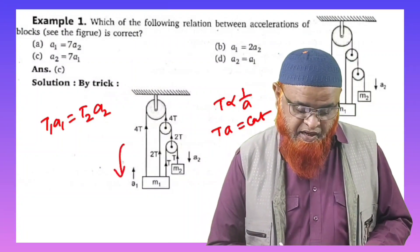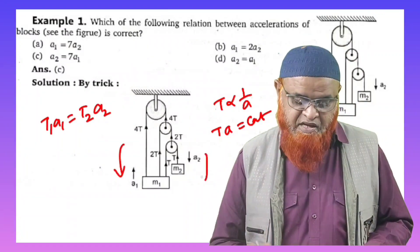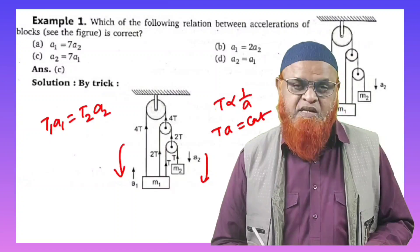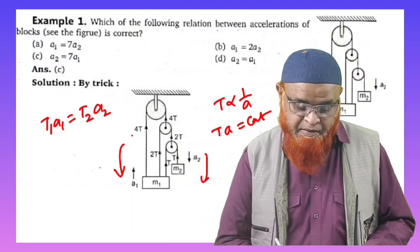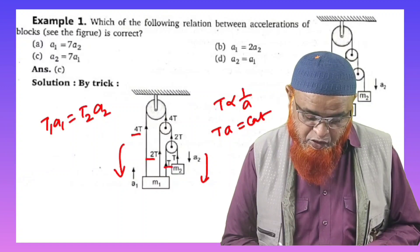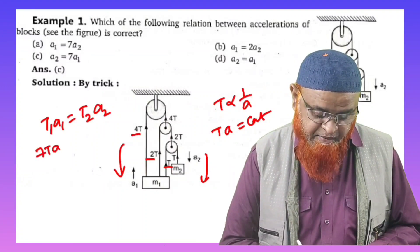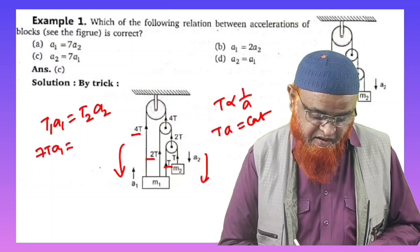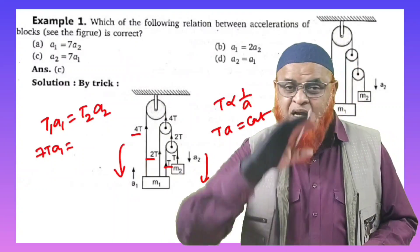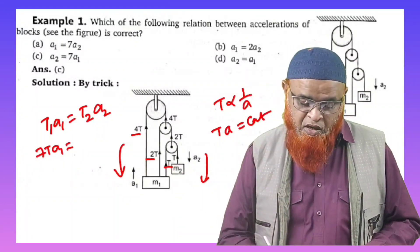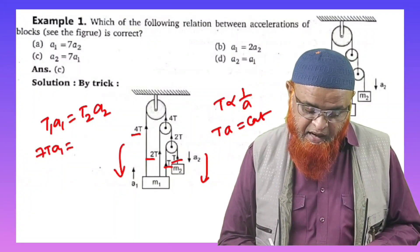Here, this side is anti-clockwise direction and this side is clockwise direction. If you take anti-clockwise direction, you will consider that 4T, 2T, and T combined together is going to be 7T into acceleration a1. Towards clockwise direction, you are going to see only T with acceleration a2, so T into a2.